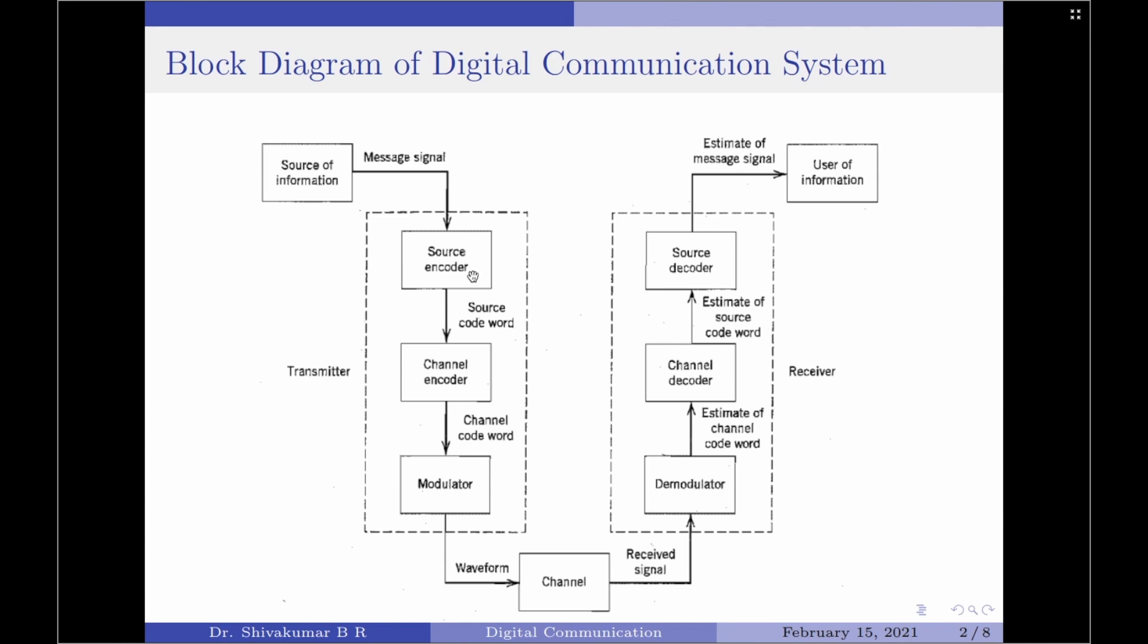At the input we have a digital source which generates a message signal. The transmitter consists of three blocks: source encoder, channel encoder, and modulator. The receiver consists of three blocks: source decoder, channel decoder, and demodulator. The transmitter and receiver are connected by an electrical channel and the output of the receiver is the user of information, which usually is an end user.